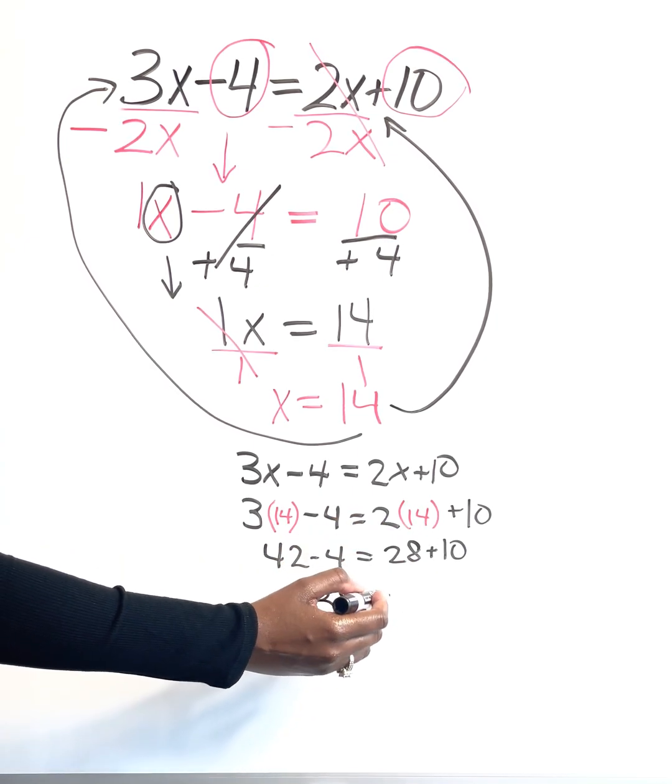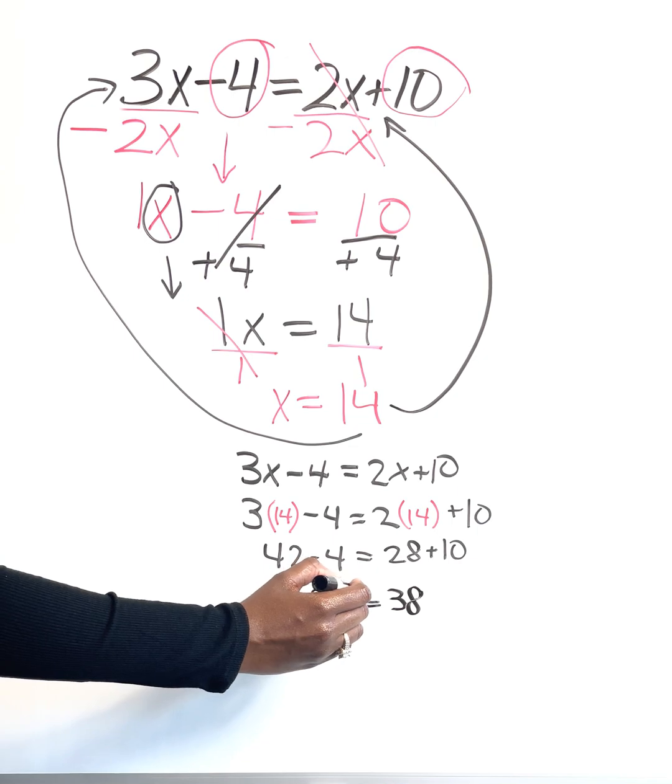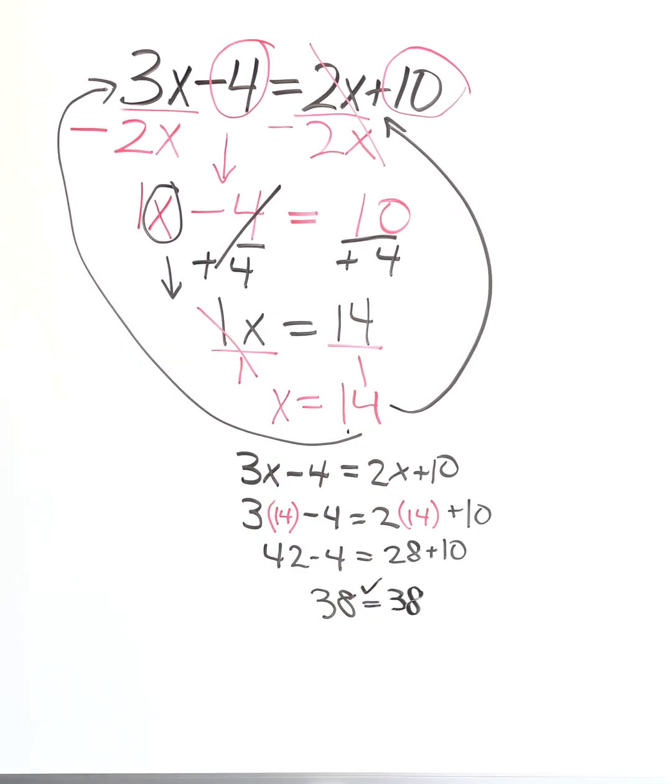And if I do 28 plus 10, that's going to give me 38. So because my values are equal on both sides, that means that this is the correct answer.